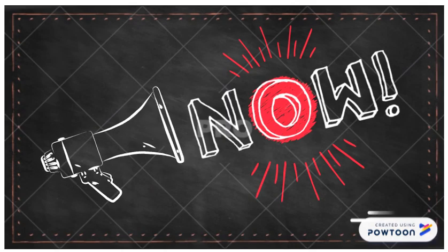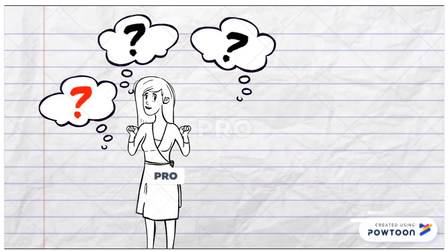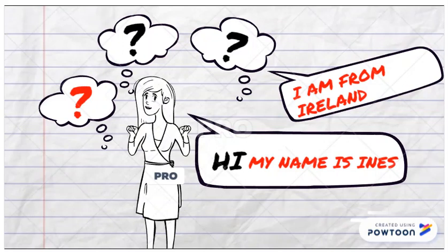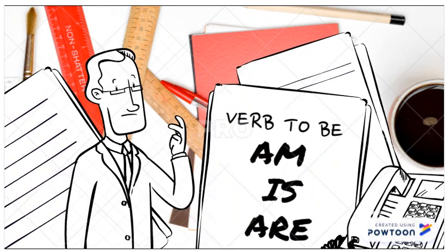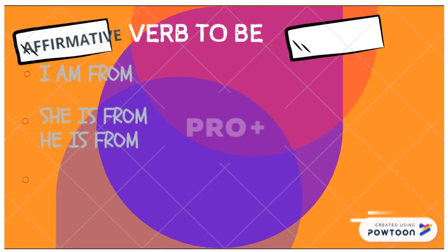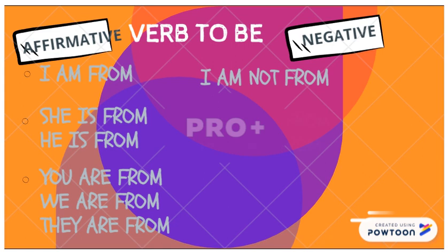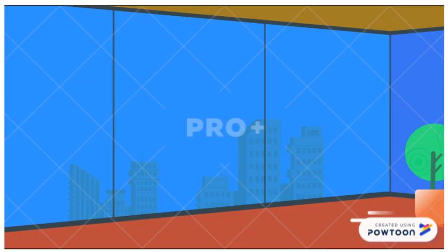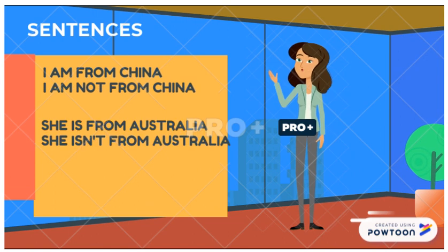Now please pay attention. Who is she? Hi, my name is Isnes. I am from Ireland. To create sentences we need the verb to be in its three forms, in affirmative and negative sentences: I am from, she is from, he is from, you are from, we are from, they are from. Negative: I am not, she isn't, he isn't, you aren't, we aren't, they aren't from.